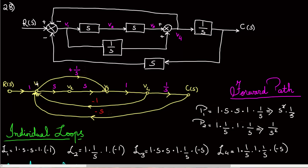Once you have R(s), your second circle is going to be V1, third circle is V2, after that is V3, then V4, and last would be your output C(s). Once you do that, you draw arrows along the straight line to show this is your forward path.